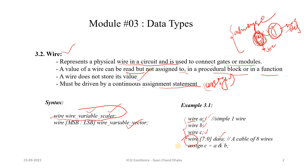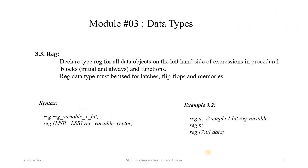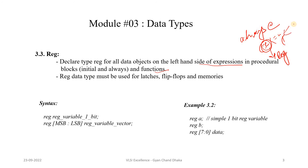A wire can be considered as a bundle or bus of cables. Any wire type data type can be driven using a continuous assignment statement and can never be driven within a procedural block or a function. Now for the register data type: all left-hand side expressions in a procedural block or in a function are always of register data type. So in an always block with x = y, x should always be of type register.